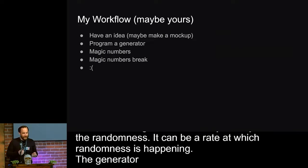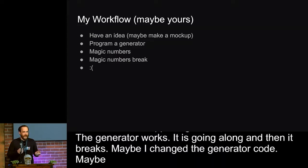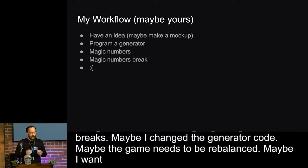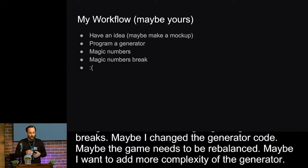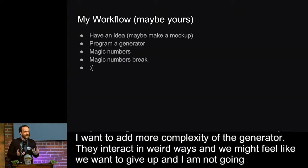Maybe I changed the generator code. Maybe the game needs to be rebalanced. Maybe I want to add more complexity to the generator. And I think it's hard to pick random numbers. They interact in really weird ways. We might just feel like we want to give up. Like, I'm just not going to have any magic in my generator at all. And I don't think that's possible.